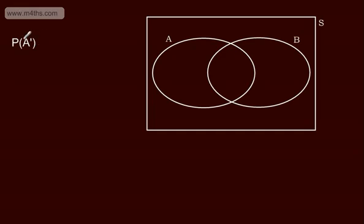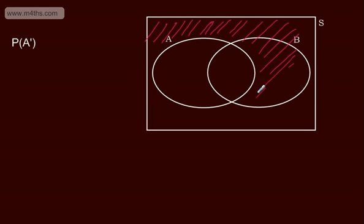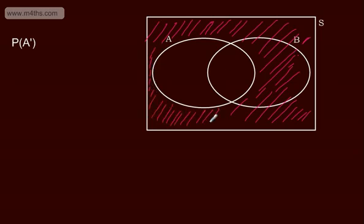The probability of A dashed, or the complement of A, or not A — this is everything but A. So we go around this way, all through here is perfectly fine, all round here outside of B, and then we come back round down the side. This is called the complement of A, or the probability of A not — so it's not in A.